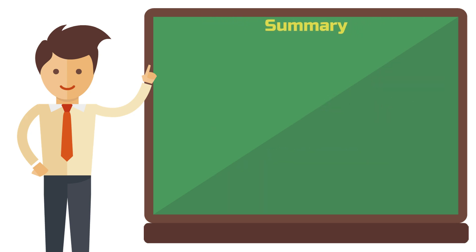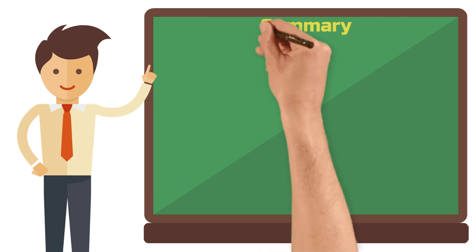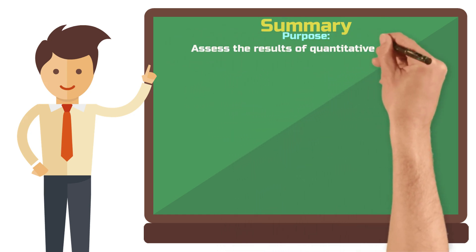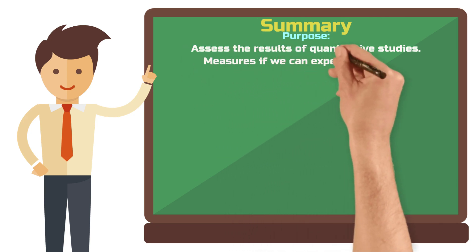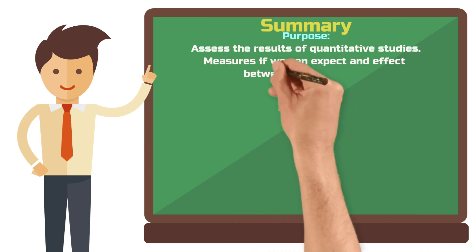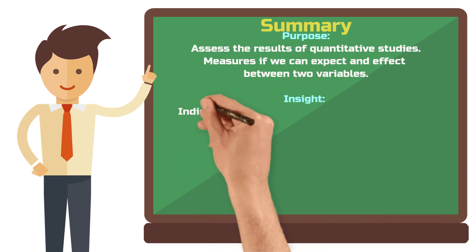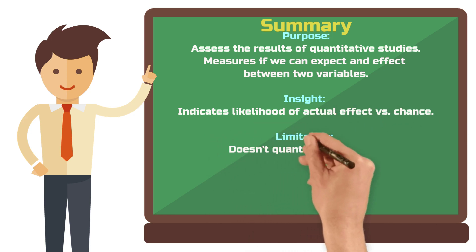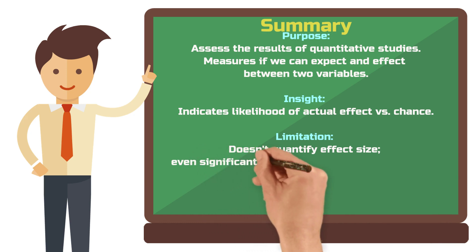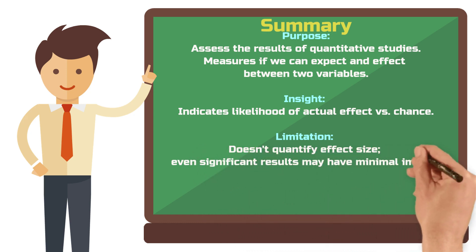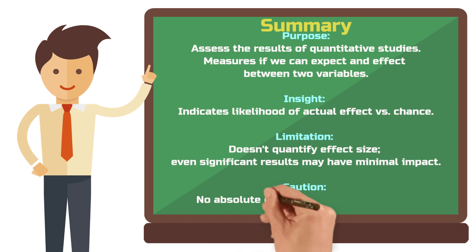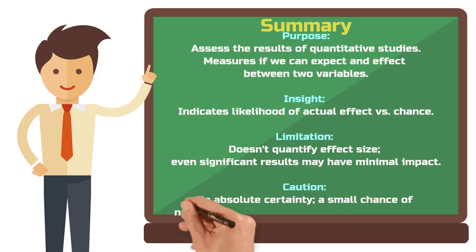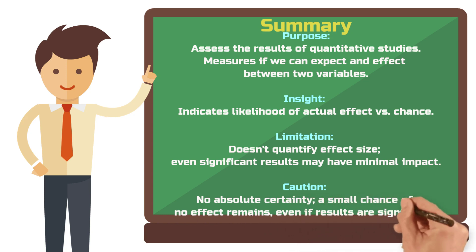So let's summarize what we've learned. Statistical significance is an important tool to assess the results of quantitative studies that aim to measure an effect between two variables. It tells us how probable it is that our result is based on an actual effect or that the result was based merely on chance. However, statistical significance does not tell us how big an effect is. This means that even though an effect is statistically significant, the effect might be very minimal. We can also never say with absolute certainty that the result was not created by chance. Even with a statistically significant result, there is still a small probability left that there is no effect.